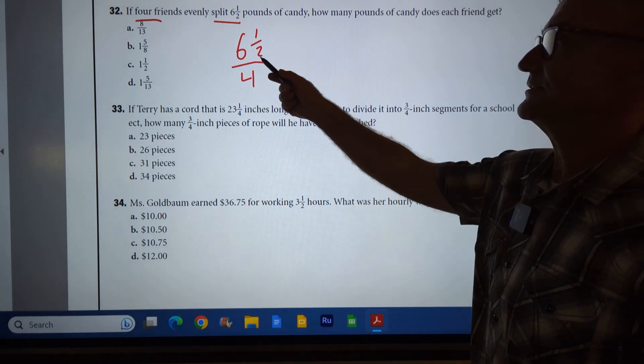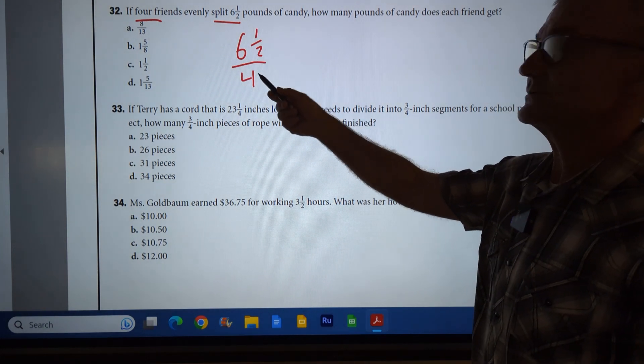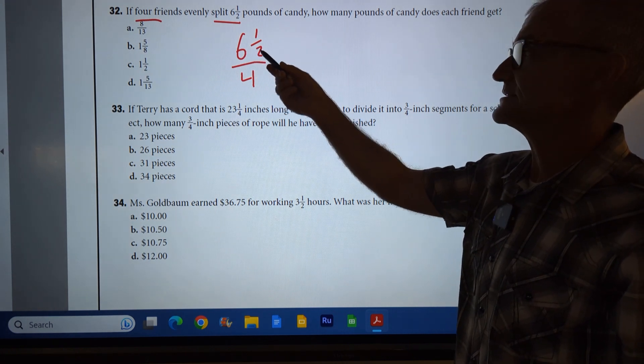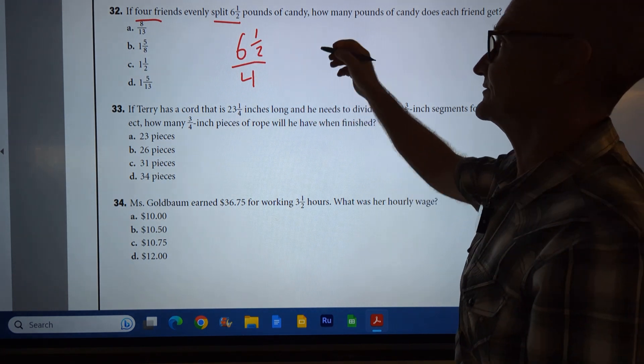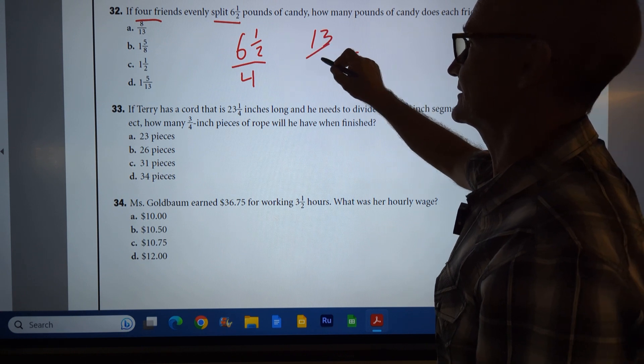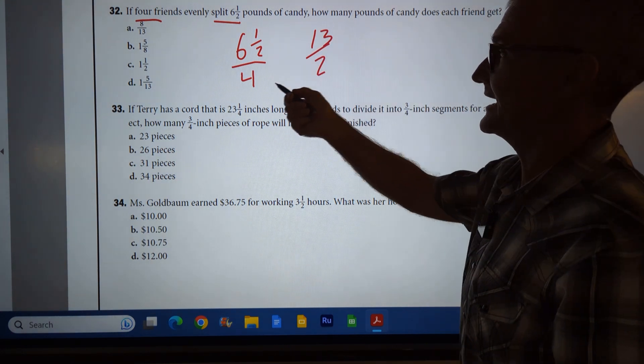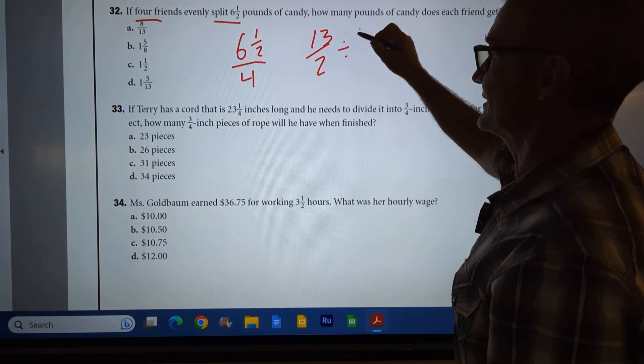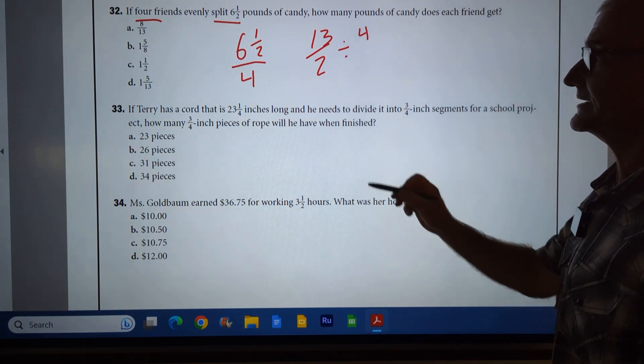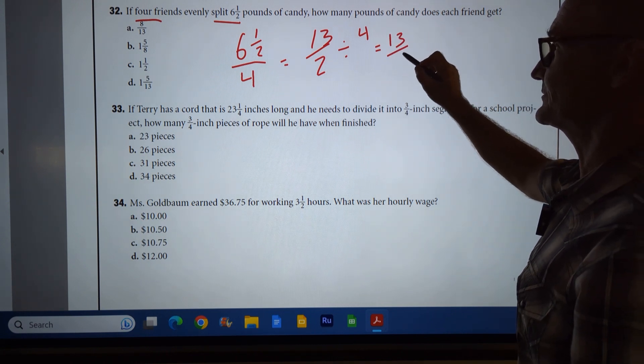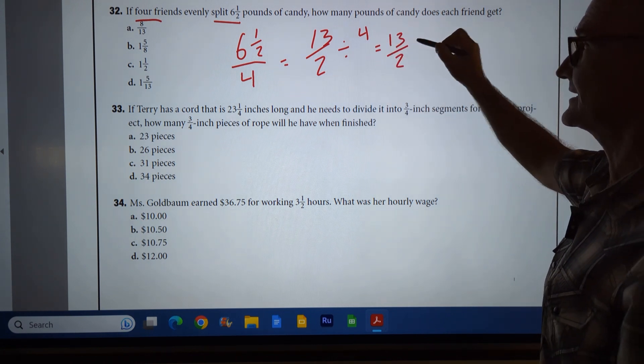So what I'm going to do is turn this into not a mixed number. The way I do that is I do the integer six times the denominator two. Six times two is 12, plus one is 13, and that gives me 13 halves. I'm going to take that 13 halves and divide it by four. The way I divide fractions is I multiply by the reciprocal, and what that means is I change that to multiplication.